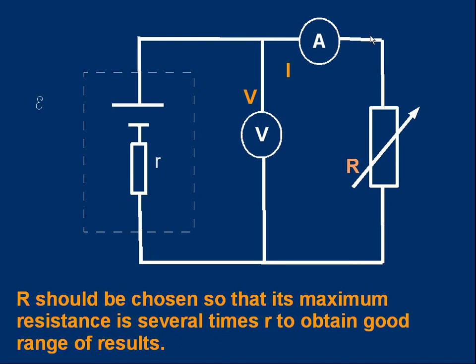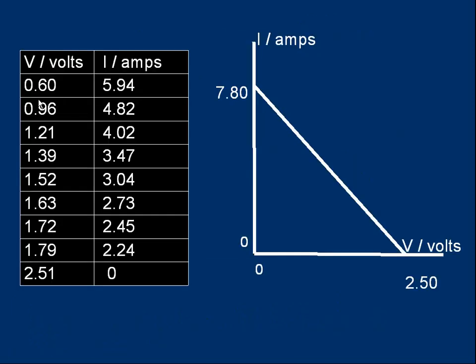Okay, let's look at the sort of results. Here, for example, when the voltage was 0.6 volts, the current was 5.94 amps, and so on. The bottom reading looks like the resistor has been disconnected. The voltmeter reading with 0 current is simply 2.51 volts.